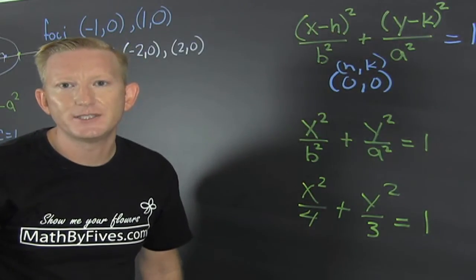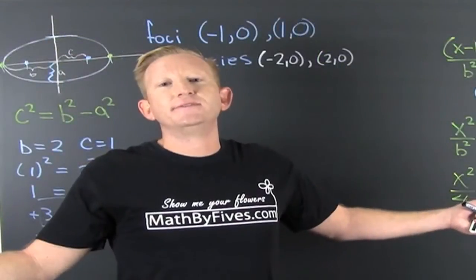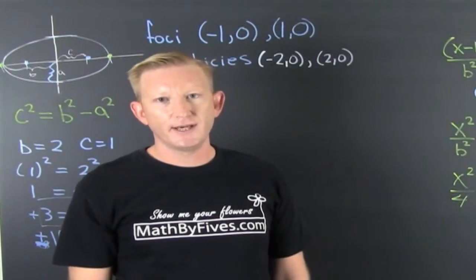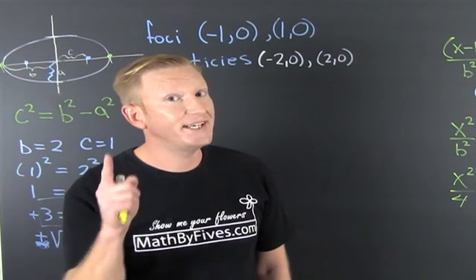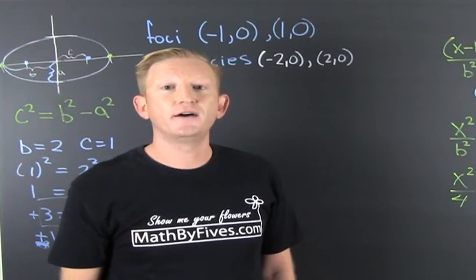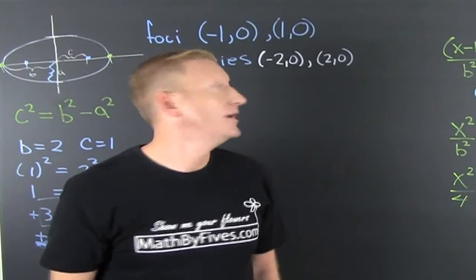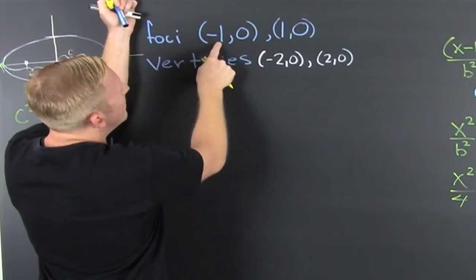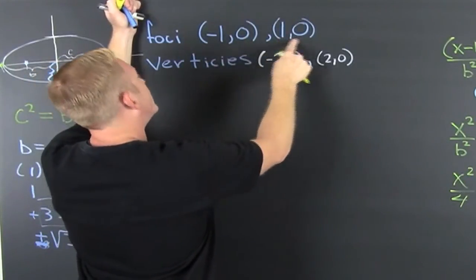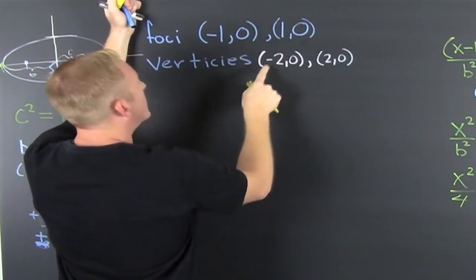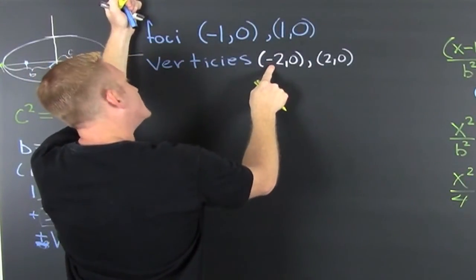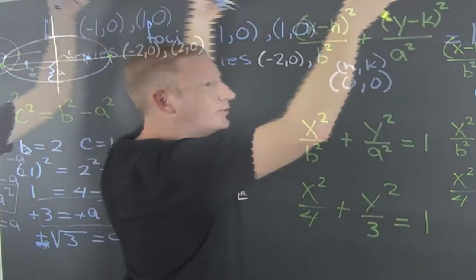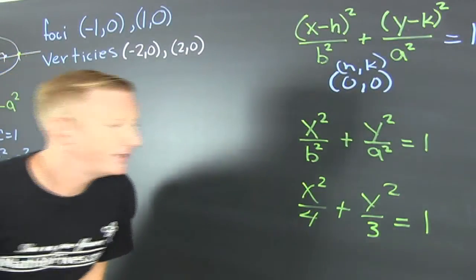But what is the equation of Stewie's head? Well, we didn't show that Stewie's head was an ellipse. But we did find the equation of an ellipse where the foci were at (minus 1, 0) and (1, 0), and the vertices were at (minus 2, 0) and (2, 0). So I guess that's it — it's all over.